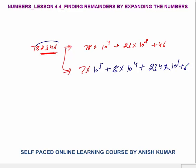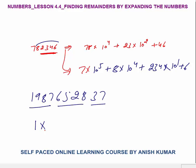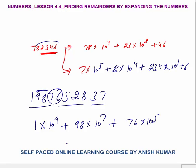For example, 1 9 8 7 6 5 2 8 3 7 4 4 8 — a 10-digit number. After 1, there are 9 digits, so this is 10^9. After 98 there are 7 digits, so 98 × 10^7. Then 76 × 10^5. Next, taking 528: there are 2 digits after 528, so 528 × 10^2. Then 37. That's the basic concept.